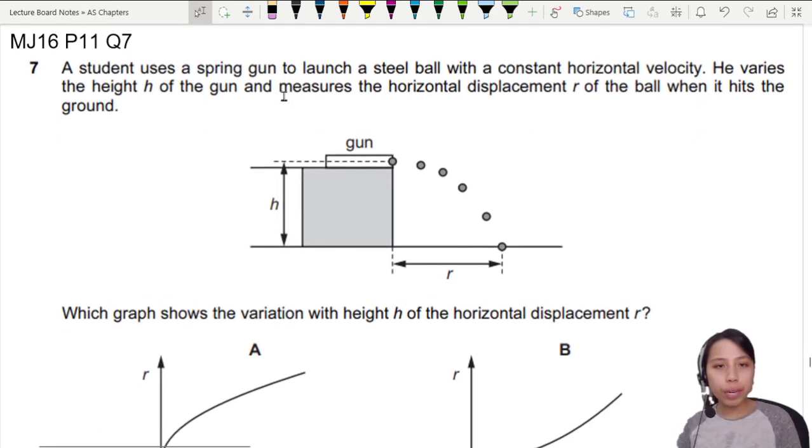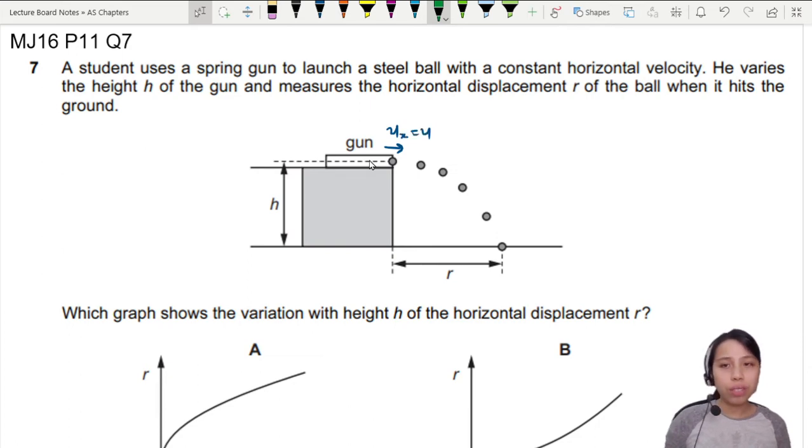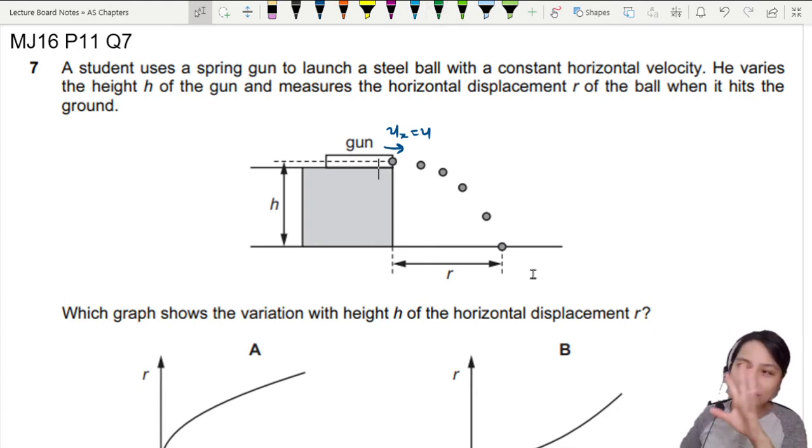A student uses a spring gun to launch a steel ball with a constant horizontal velocity. So you see this gun? The object is going to come up with perfectly horizontal velocity right here. That's going to be U_x, the initial velocity. Then they will measure the horizontal displacement R, also known as the range, how far they travel, and the height from which you launch this. This is a very common lab experiment. Hopefully you get to think about that experiment if you did.